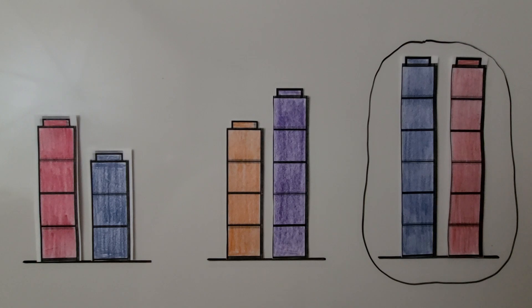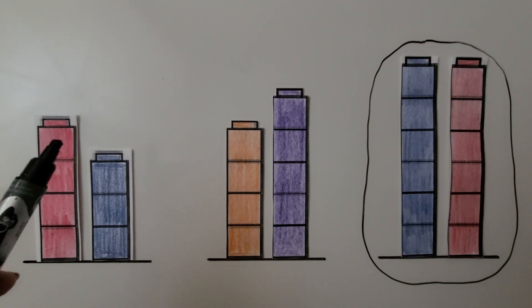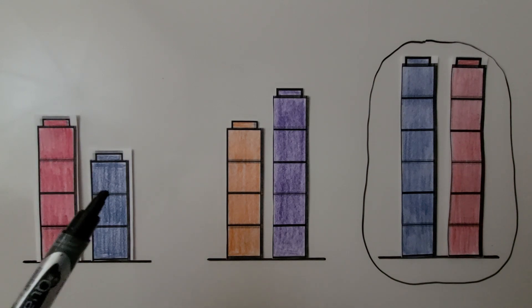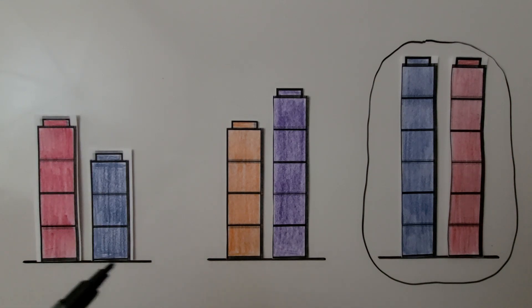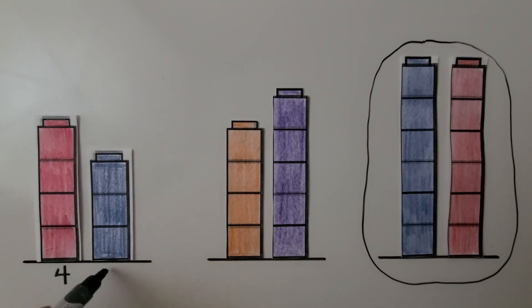When a cube tower is shorter than another cube tower, it will have fewer cubes and not be as tall. The blue cube tower is not as tall as the red cube tower, and it has fewer cubes. This one has four cubes and this one has three cubes — it has fewer cubes.